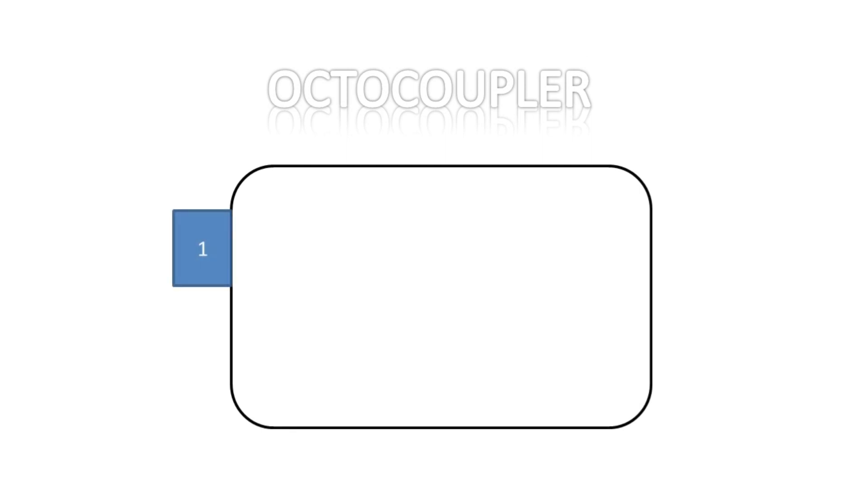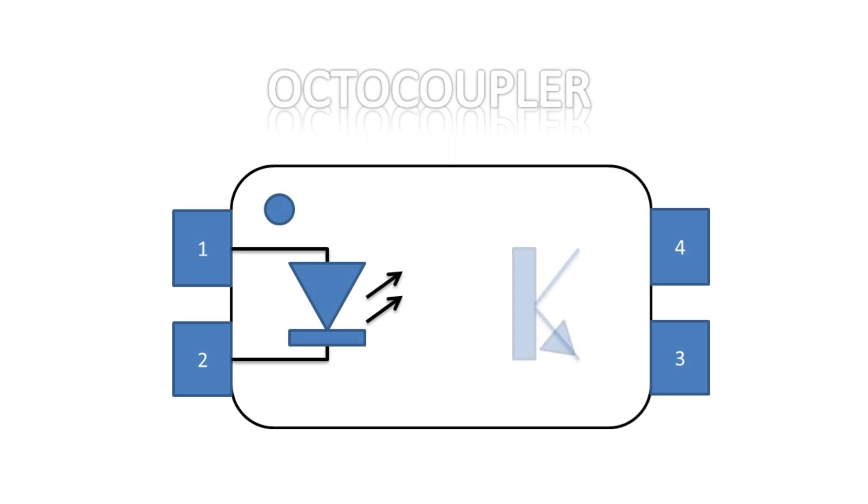The optocoupler is a very important part in modern electronics. This is called as an opto-isolator, optocoupler and photocoupler, or optical isolator. This is an electronic component that transfers electrical signals between two isolated circuits by using light.